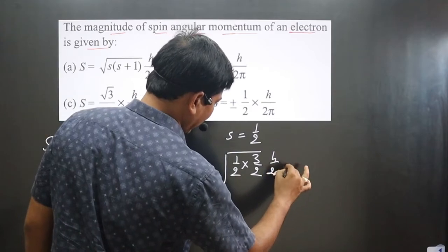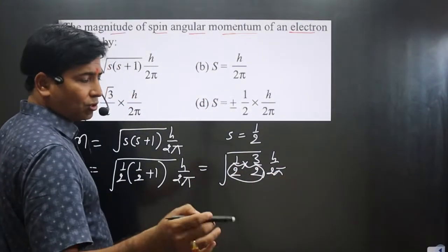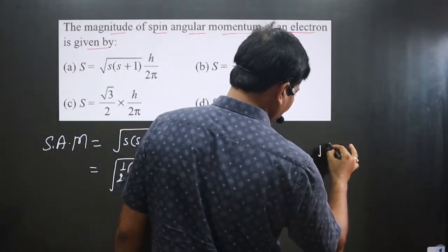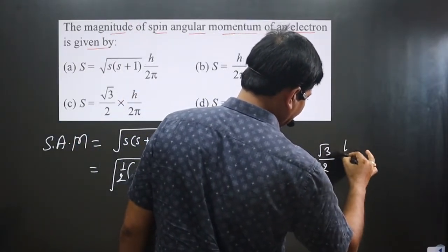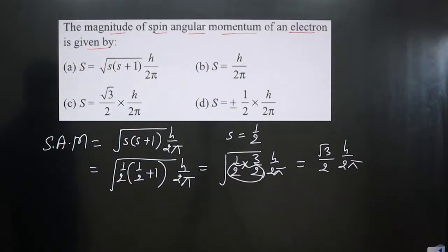Under the root, we get three-fourths. The square root of four is two, so we get √3/2 × ℏ/(2π). This is the answer we get. Looking at the options given, you can see option C is correct.